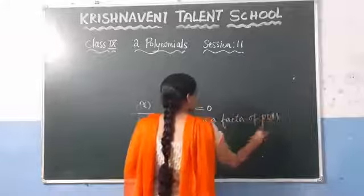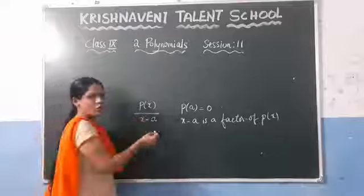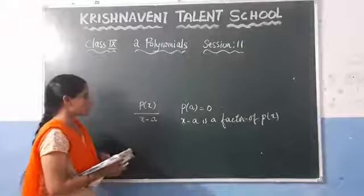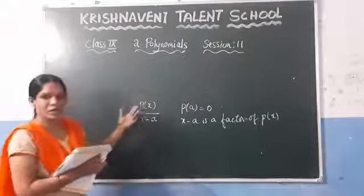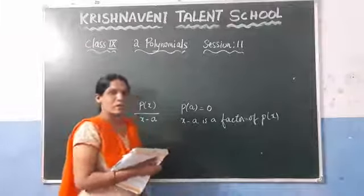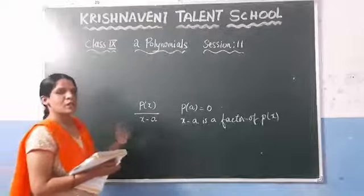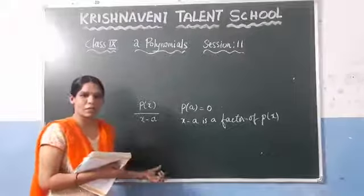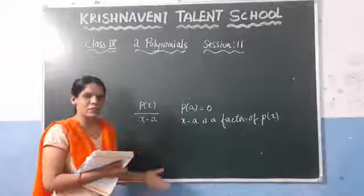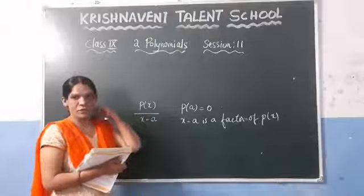Similarly, the converse says: if x minus a is a factor of p of x, then when one number is a factor of another, the remainder is 0. This is the factor theorem — if you are dividing one polynomial with a linear polynomial and the remainder is 0, then we can say that x minus a is a factor of that polynomial.